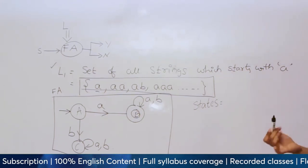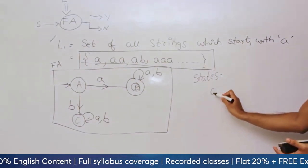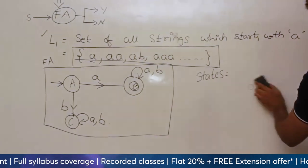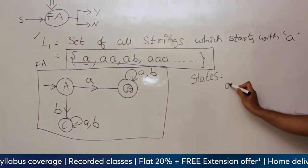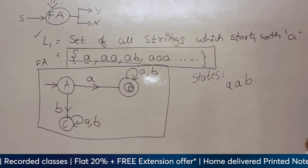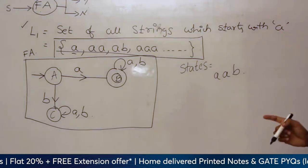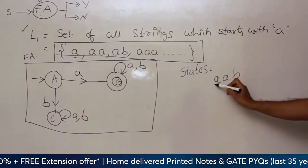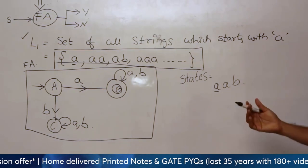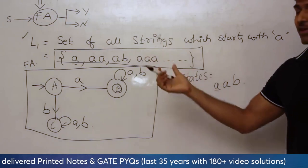If I take a string — for example AAB — my question is whether this string is present in this language or not. Don't just say that since it starts with 'a' it is obviously present. I want to give this problem to a machine and solve it, so I cannot ask it to think intuitively. Any machine should be able to answer this question using this finite representation.